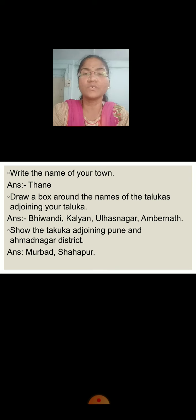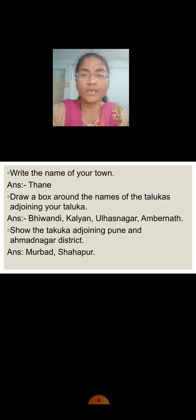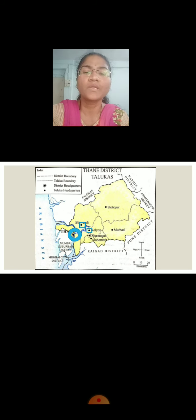Write the name of your town, children — that is Thane. Now draw a box around the names of the Talukas adjoining your Taluka. I have shown you. Say this is Thane where we all live. The Talukas adjoining to Thane are Bivandi, Kalyan, Ullasnagar and Ambarnaar. Draw a box around the Talukas which are adjoining to Thane. Clear everyone?